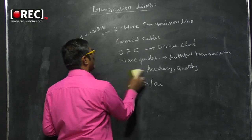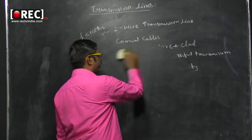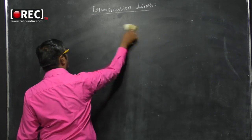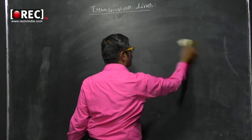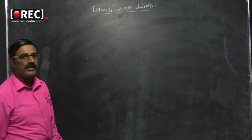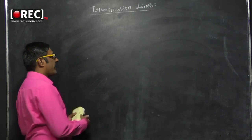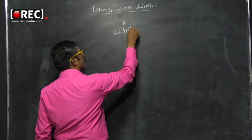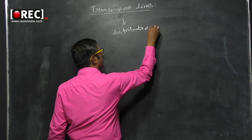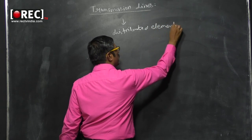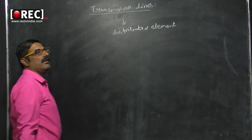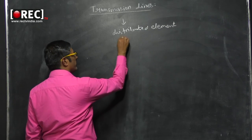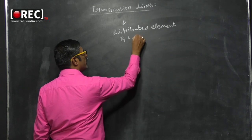This is an overview of what transmission lines are and the different types. Now let me explain the basic structure of a transmission line. A transmission line is a distributed element, meaning we have four passive elements in our electrical circuits: R, L, C, and G — resistance, inductance, capacitance, and conductance.